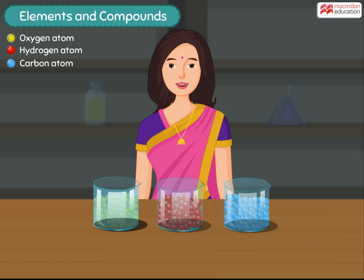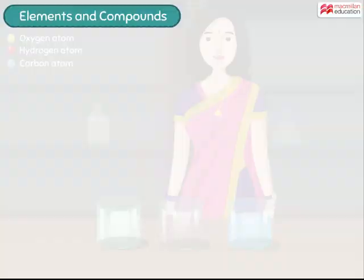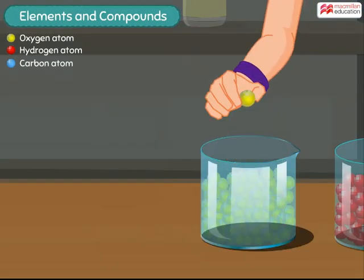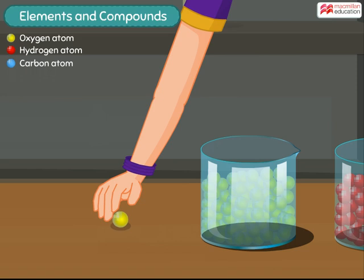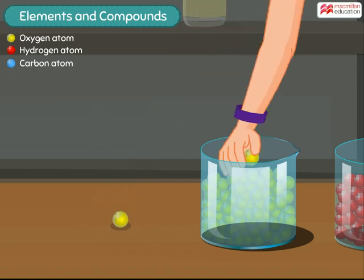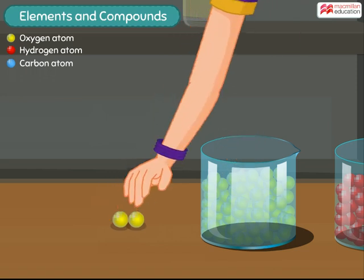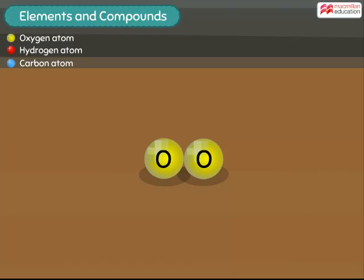You know that one oxygen molecule is made up of two oxygen atoms. So here we go — one and two oxygen atoms put together, and we have an oxygen molecule.